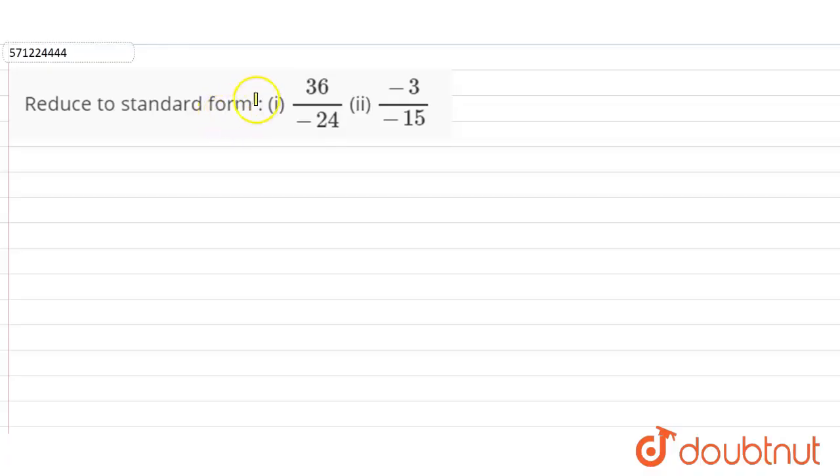Hi student, in this question we have to reduce the following to the standard form: 36 divided by minus 24 and minus 3 divided by minus 15.